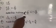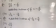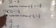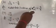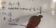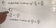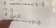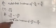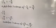Additive inverse of 6 upon 5 equals minus 6 upon 5. Part number 4 is 2 upon minus 9, which equals minus 2 upon 9. Additive inverse of minus 2 upon 9 equals plus 2 upon 9. Part number 5 is 19 upon minus 6, which equals minus 19 upon 6. Additive inverse of minus 19 upon 6 equals plus 19 upon 6.